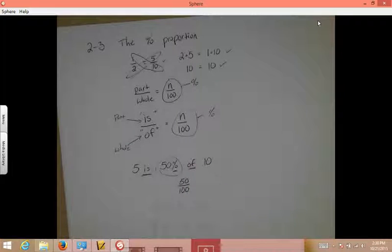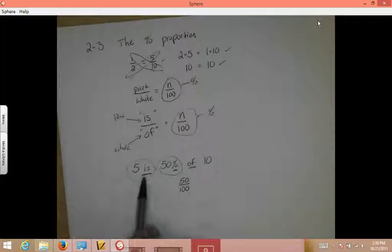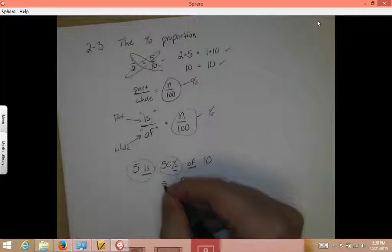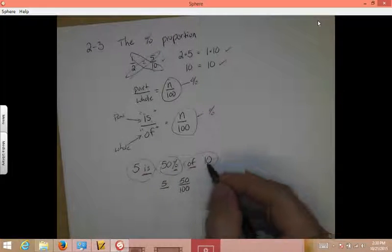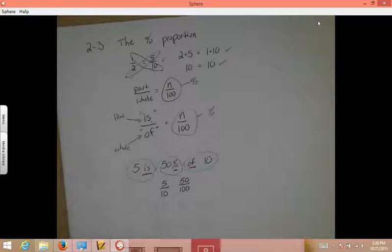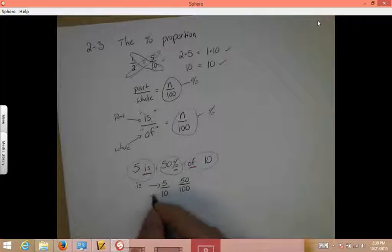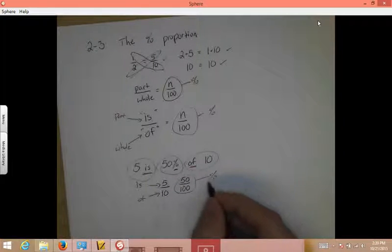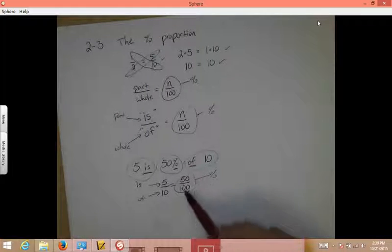And pretty literally, you look for the words there and say, OK, the is. Well, the is is right by my five. Five goes with the word is and is we know goes on top. So five is on top. The of is my ten. Of goes on bottom. So this is my is. This is my of. And this is my percent. Five is fifty percent of ten.